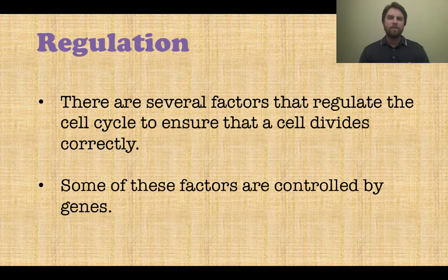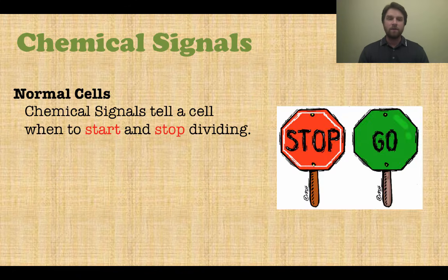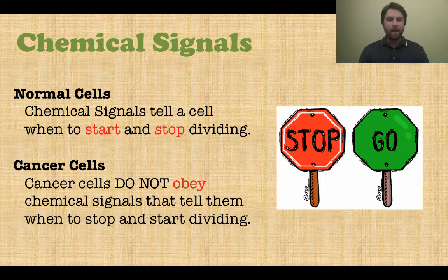We're going to look at normal cells versus cancer cells for some of these factors. The first one is chemical signals. In normal cells, chemical signals tell the cell when to start dividing and when to stop — a red light, green light sort of effect. Cancer cells, however, don't obey those chemical signals. They don't obey the traffic lights — they may go when the light is red, stop when it's green, or just divide no matter what, with no regard for those signals.